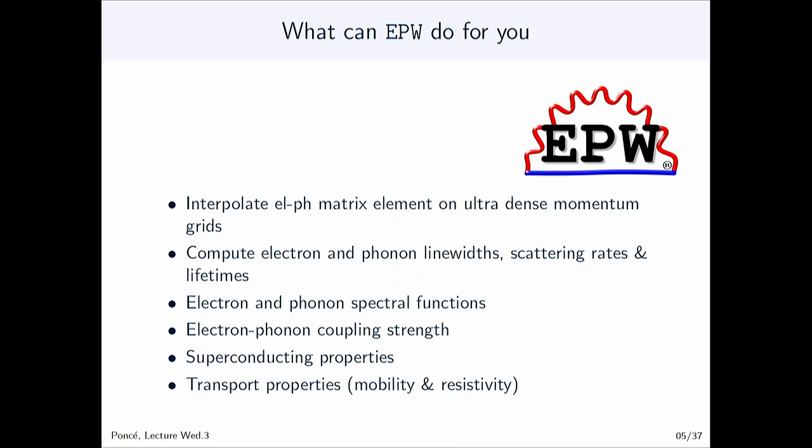EPW can give you interpolated electron-phonon matrix elements on very dense K-point and Q-point grids. It can compute linewidth — both electron and phonon linewidth — as well as the scattering width and lifetime. You can also compute electron and phonon spectral functions, coupling strength lambda, superconducting properties (phonon-limited, which will be covered Friday by Roxana), and transport properties including mobility in semiconductors and resistivity in metals.